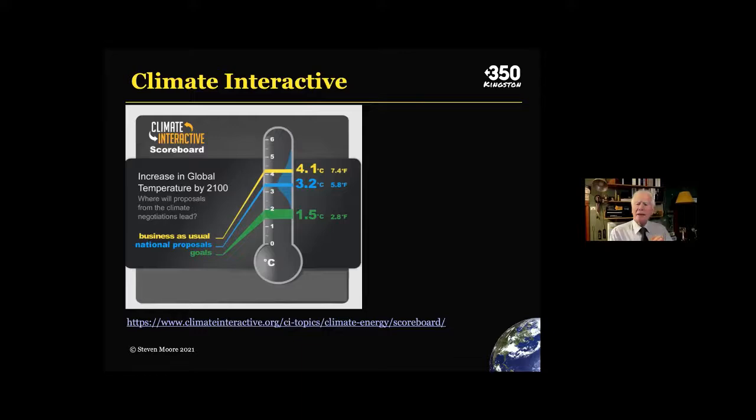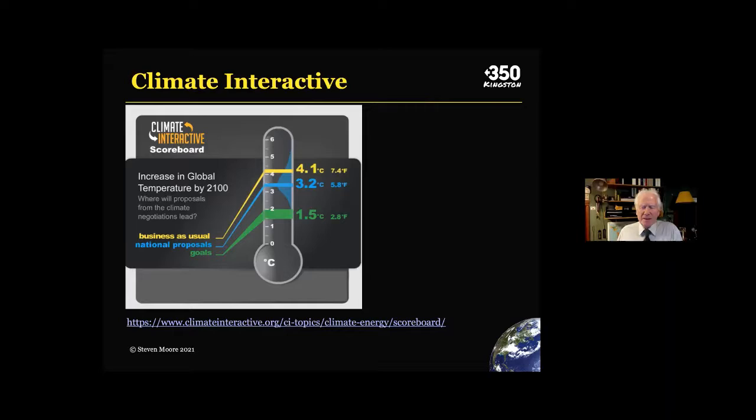I just put this up to show how deficient our leaders are in terms of addressing climate change. The promises — these are in blue — will take us to 3.2 degrees. Business as usual will take us to 4.1. And as you know, we're looking to try to stabilize somewhere around 1.5 to 2 degrees, although that's out the window, as I'll talk about in a minute.